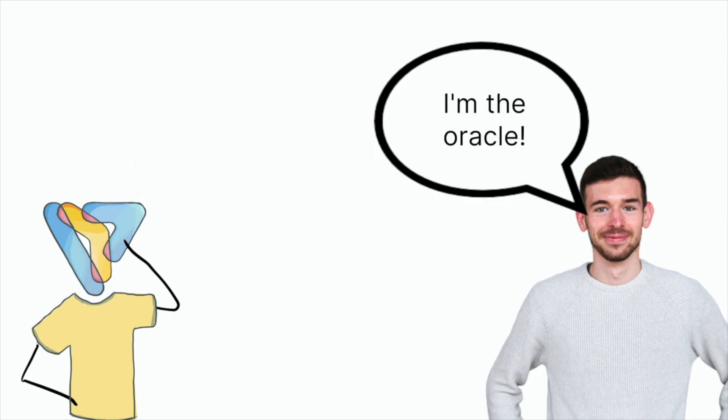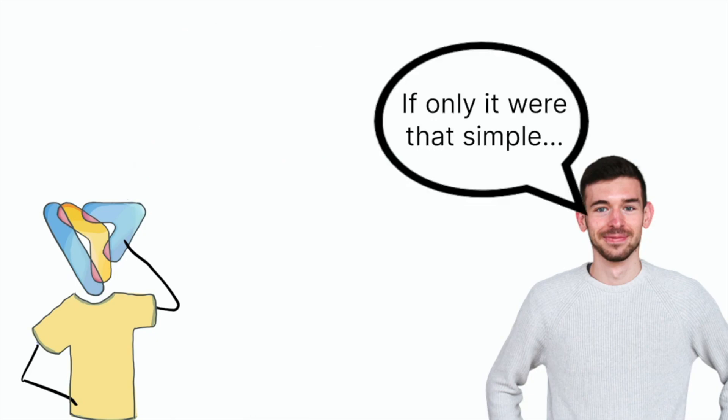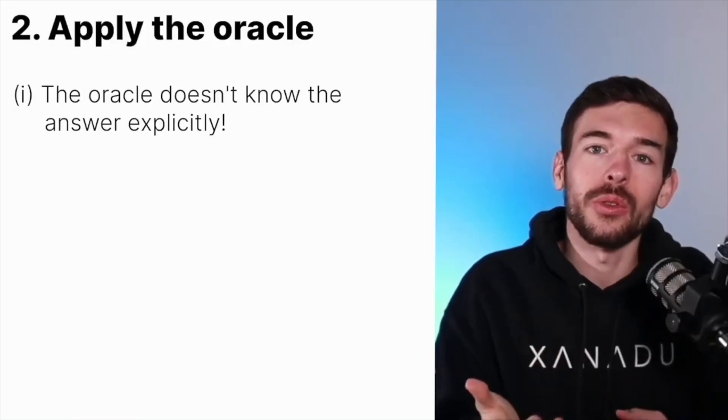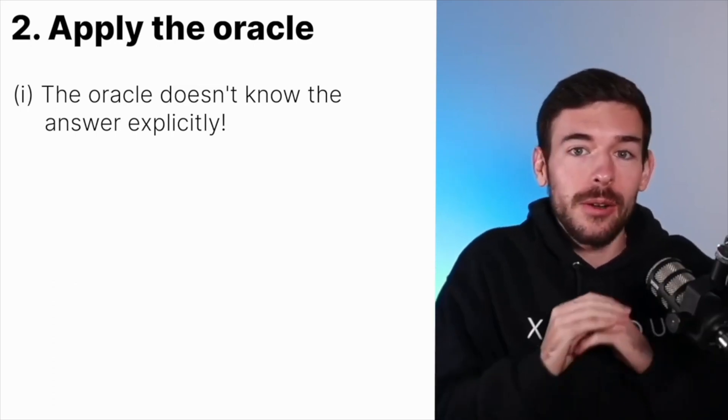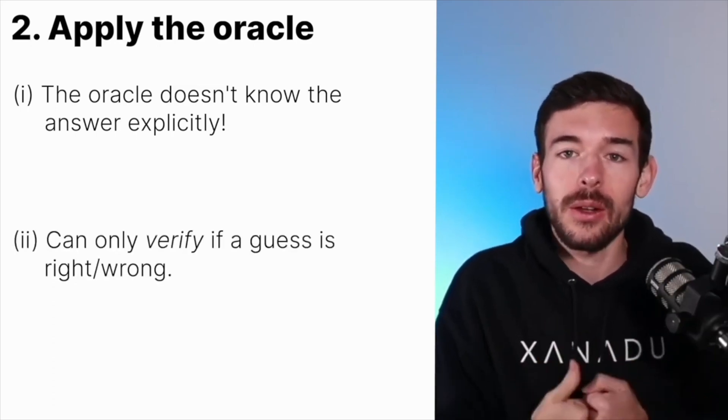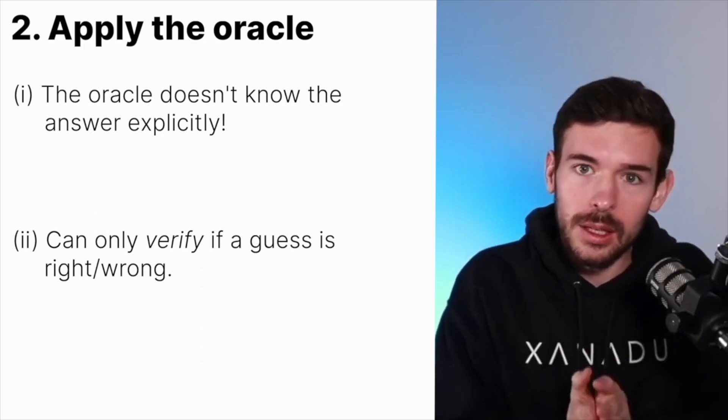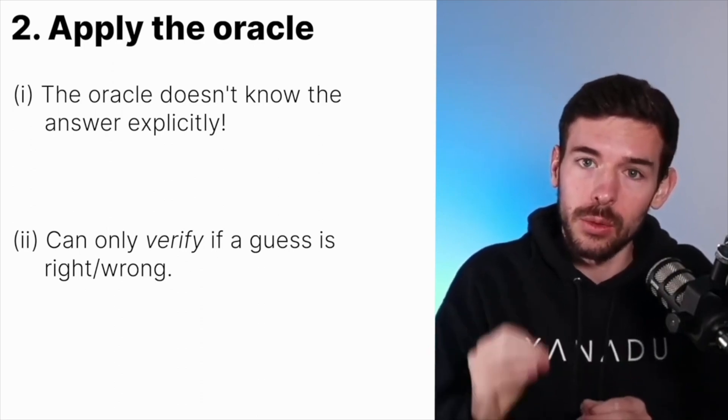But then, if we have this operator that knows the solution, why don't we ask directly, hey, tell me your favorite number? Why do I have to do this game of trying different options? It would be faster if we do it another way. It is not as easy as that. The oracle doesn't know how to create a solution. We can't ask what is the solution because the oracle has no idea.